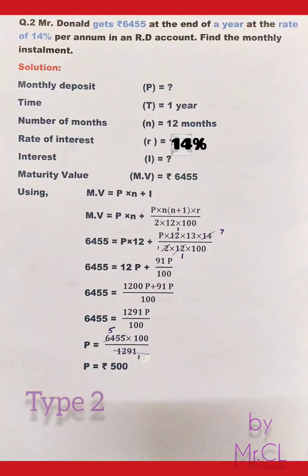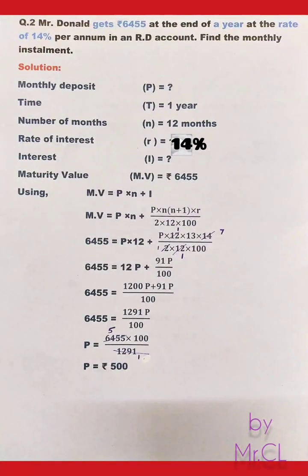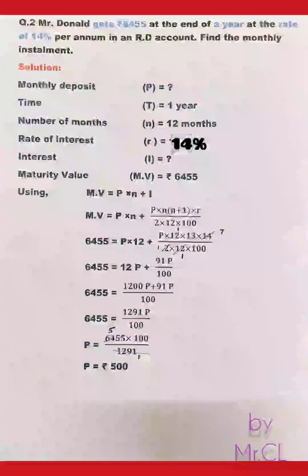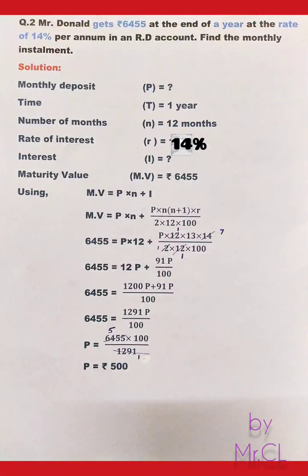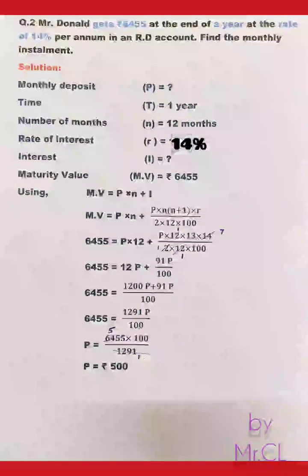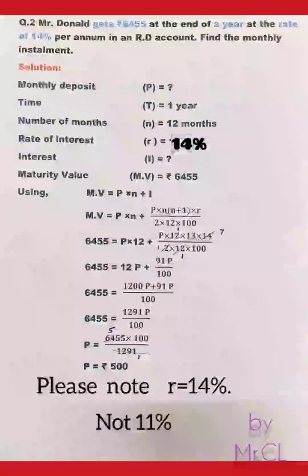Second type of question: Mr. Donald gets ₹6455 at the end of a year at the rate of 14% per annum in an RD account. Find the monthly installment. Solution: monthly deposit P is unknown; time T = 1 year, so number of months n = 12 months.